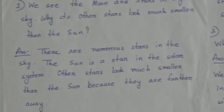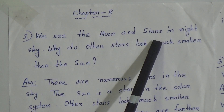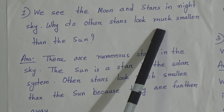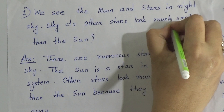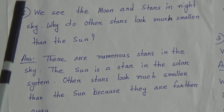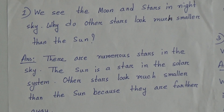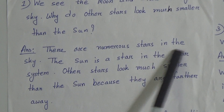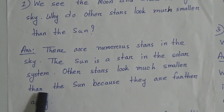You can see here there are only 3 short questions and answers. Short question number 1: We see the moon and stars in the night sky. Why do other stars look much smaller than the sun? Answer: There are numerous stars in the sky. The sun is a star in the solar system. Other stars look much smaller than the sun because they are further away.